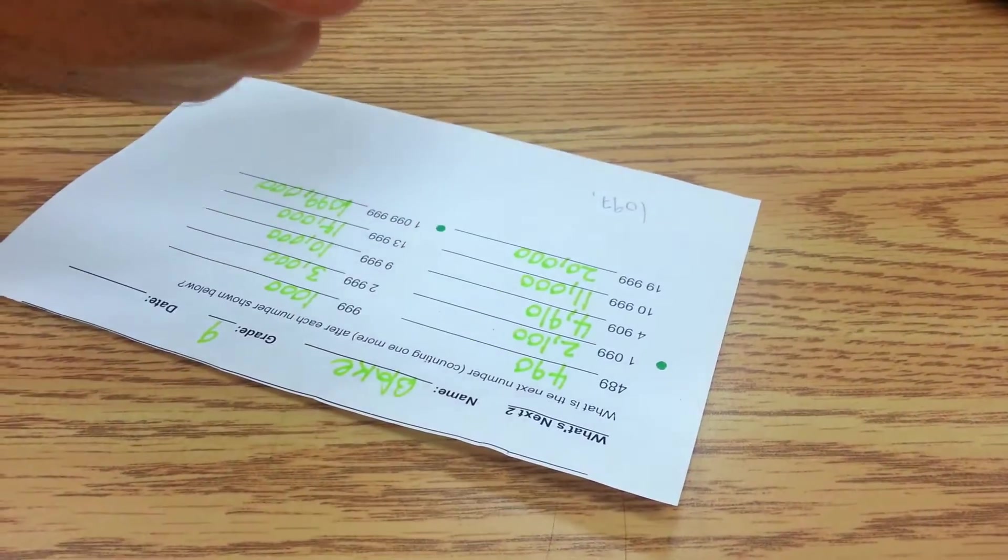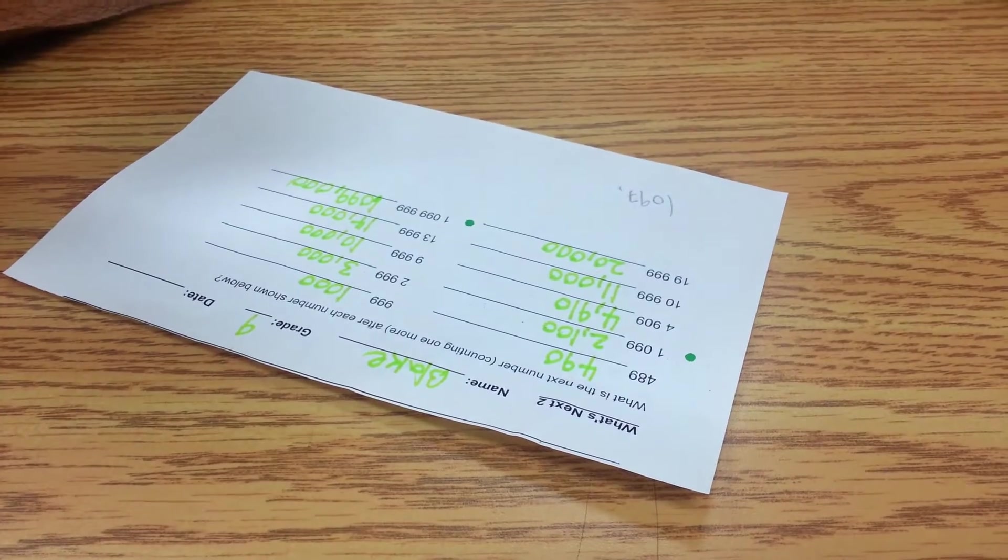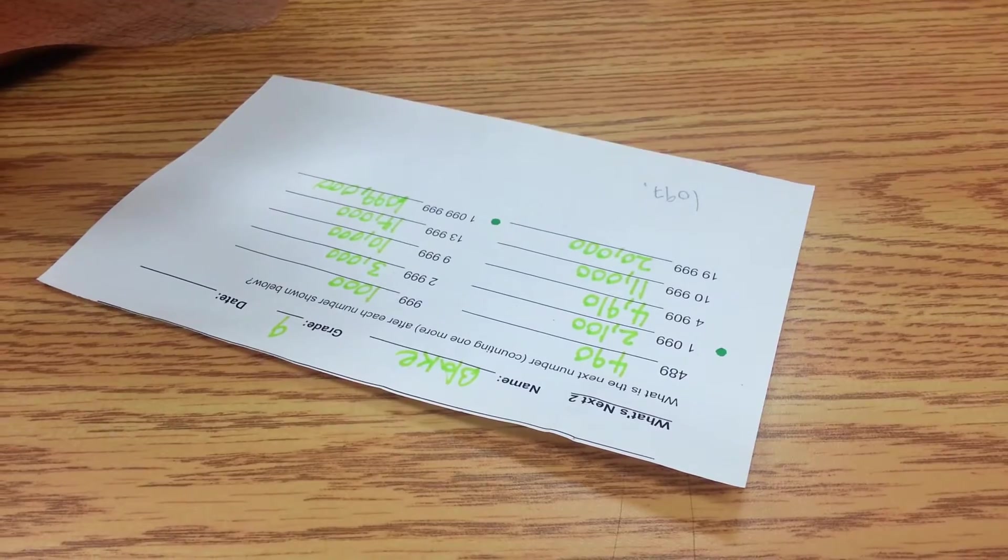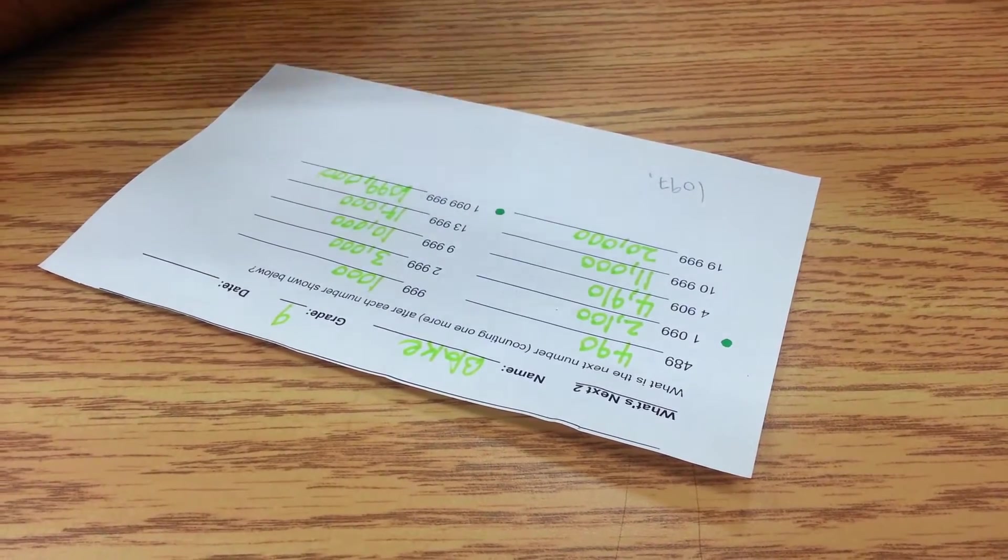1098. Keep going. 1099. Yeah. 1100? You're not sure. Something, right? Something changes.